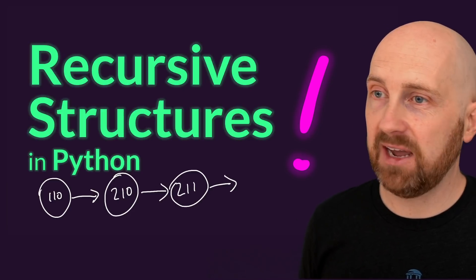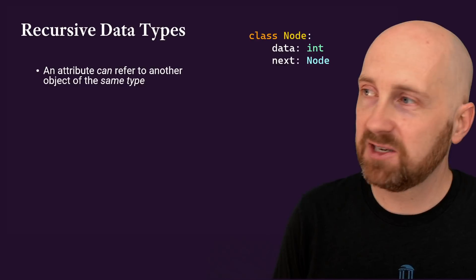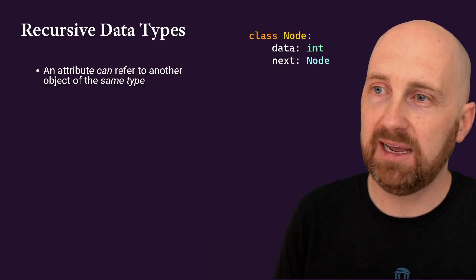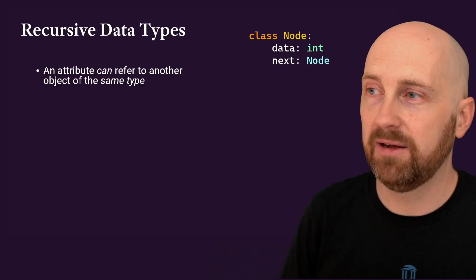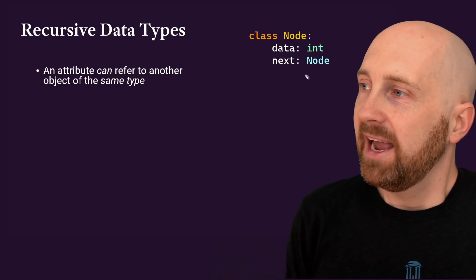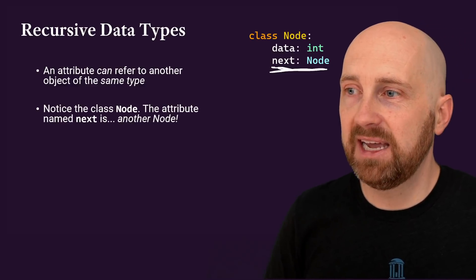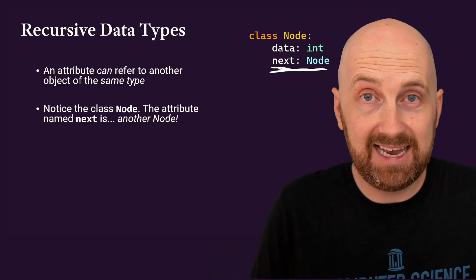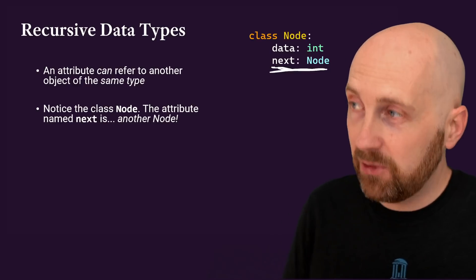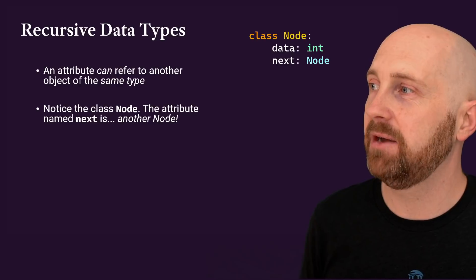Let's look at how we can define this kind of structure in the context of Python. Instead of calling our class 'class', let's call one of these a node — this is a commonly used term in a data structure where we've got nodes in some linked list. It has a data attribute (the course number), and what makes this a recursive data type is that the next attribute is of type node — the same type as the class being defined. So here we've got a next that can hold a reference to another node object. That's what makes this a recursive data type.